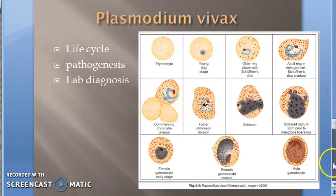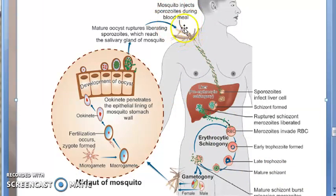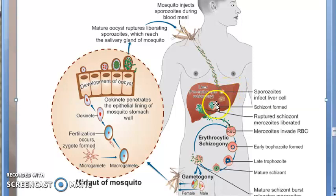The female Anopheles mosquito injects sporozoites during a blood meal — female mosquitoes are always mentioned because they bite deeper with a sharper mouthpart. The sporozoites first go to the liver, where they multiply. In the liver they become a schizont — a hepatocyte containing the parasites — which then ruptures and releases merozoites.